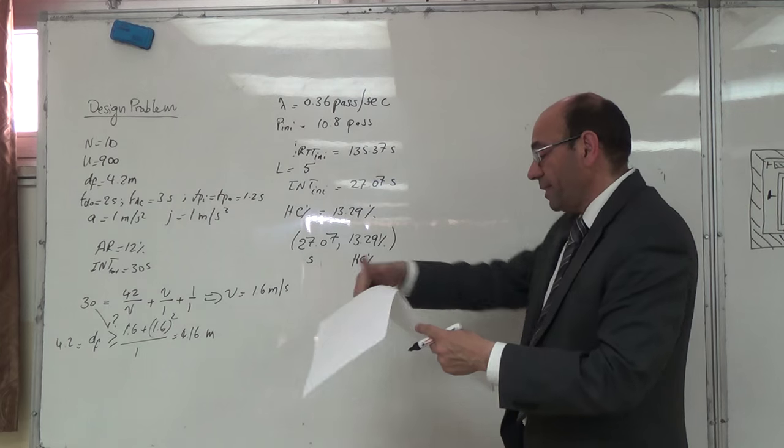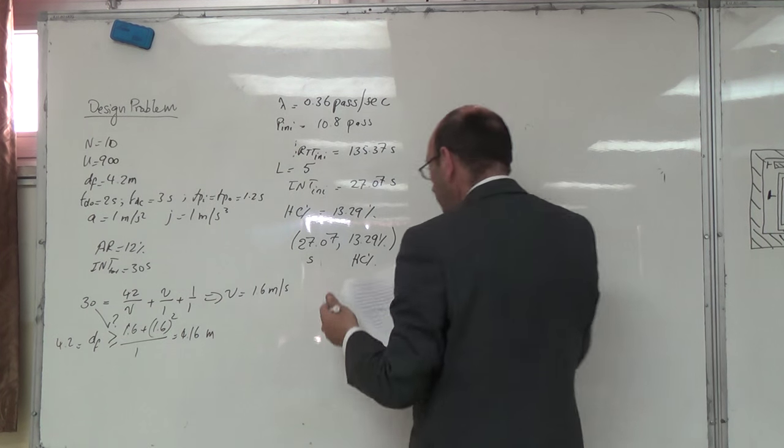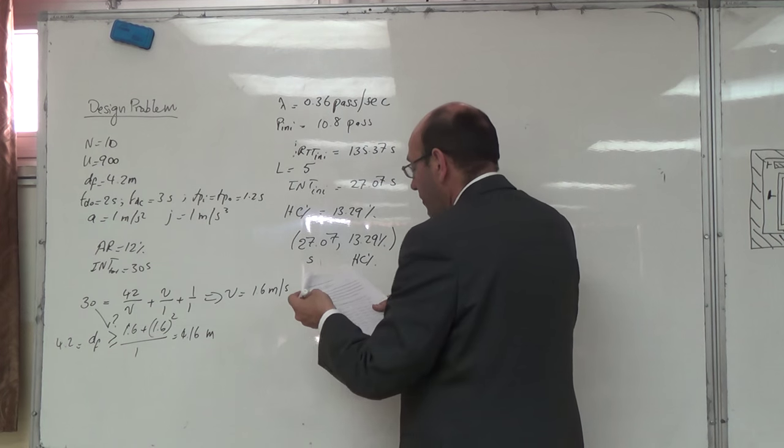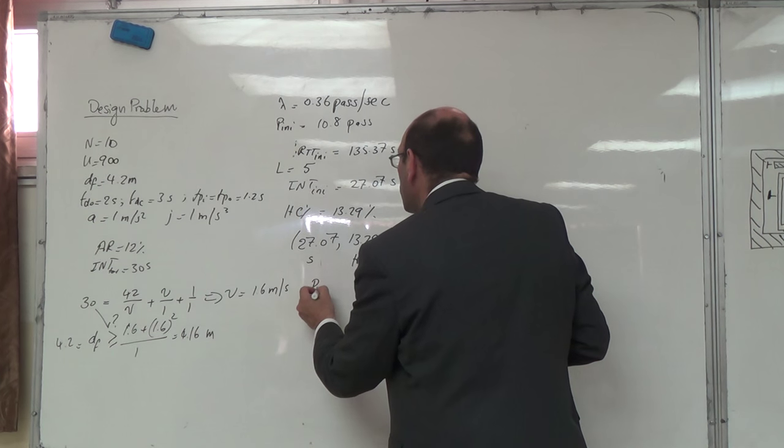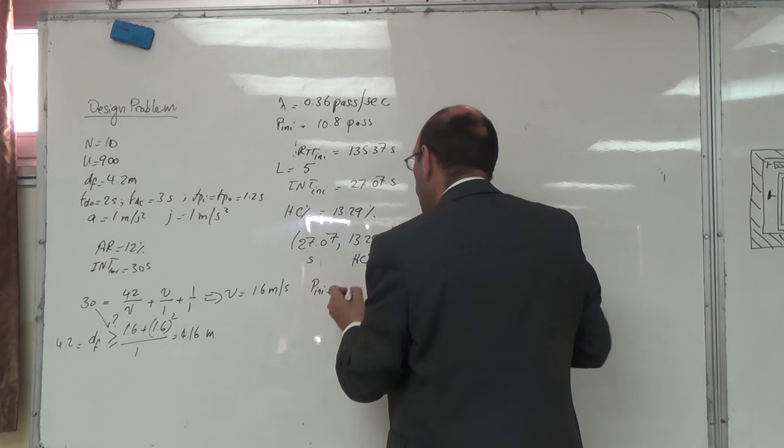هون لمنعمل iteration التانية. أنا ونحاطة table of iterations. بنعمل iteration التانية. بتطلع معي فيها المذي أوليراتي بانزل عدد الباسيجرس بساوي 9.75.